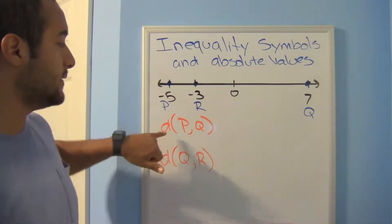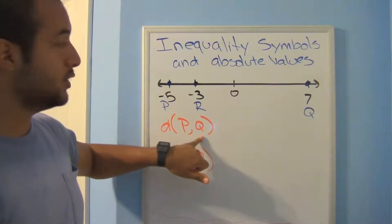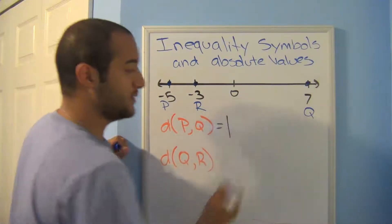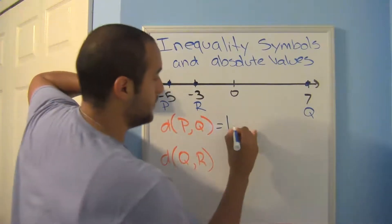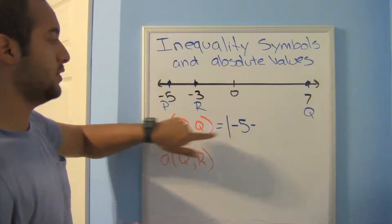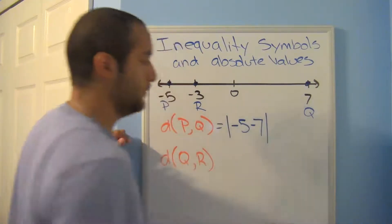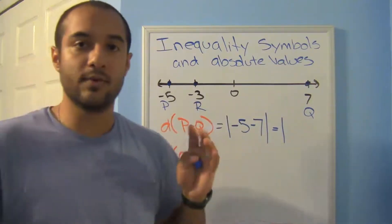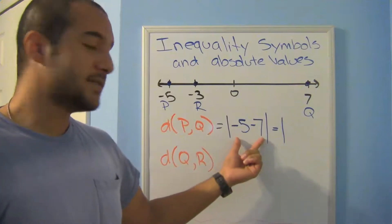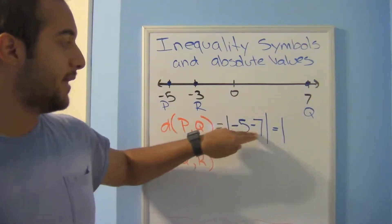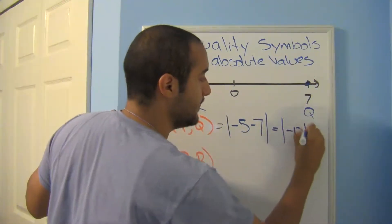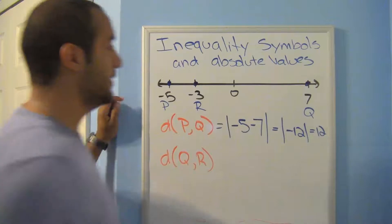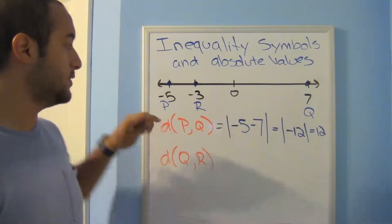Let's work this out — the distance of p to q. My three points are p, r, and q. The coordinate for p is negative 5, so: |negative 5 minus 7|. The absolute value bars act like parentheses, so I do what's inside first. Negative 5 minus 7 is negative 12. There's nothing left to do inside, so I take the absolute value: the absolute value of negative 12 is 12. There's a distance of 12 units between p and q.